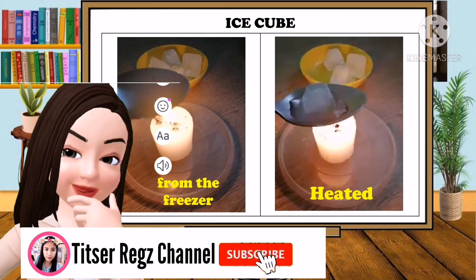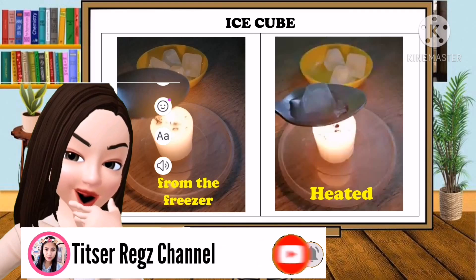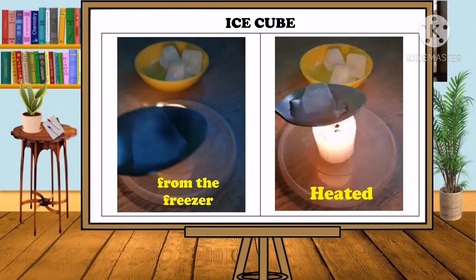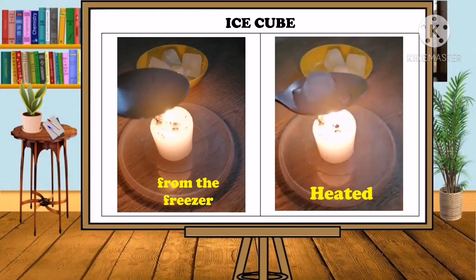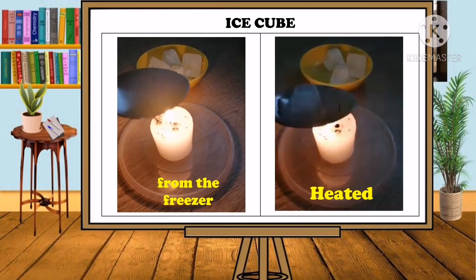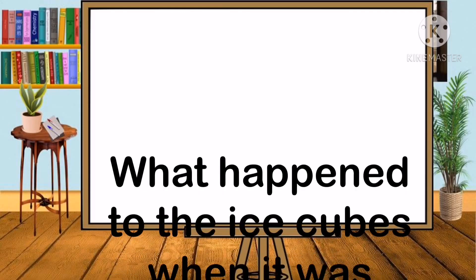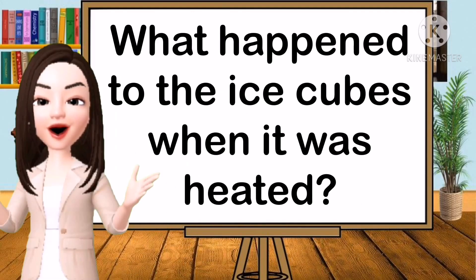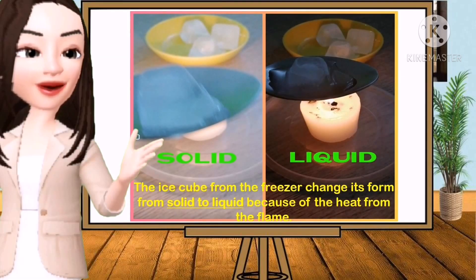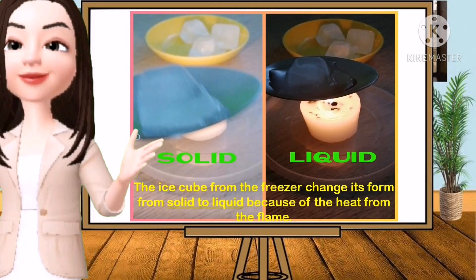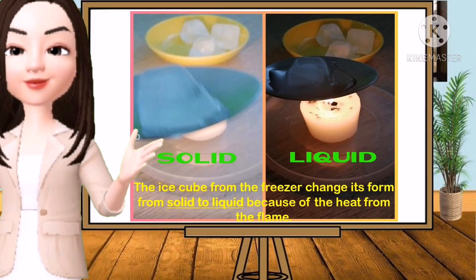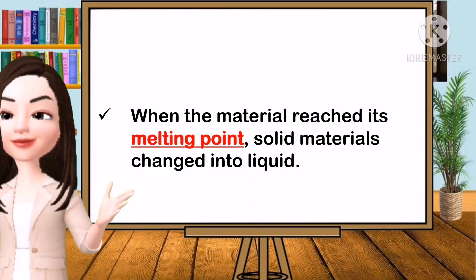Let's observe what will happen to the ice cube when we move it from the freezer and put it over the flame. What happened to the ice cubes when heated? The ice cube changed its form from solid to liquid because of the heat from the flame. When the material is heated, it changes in size, shape, and texture, but no new material is formed.